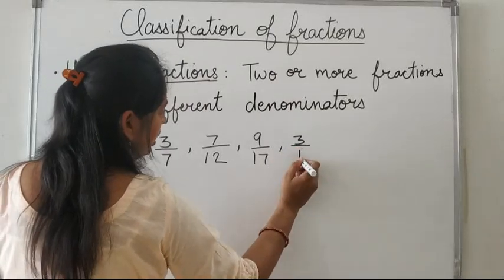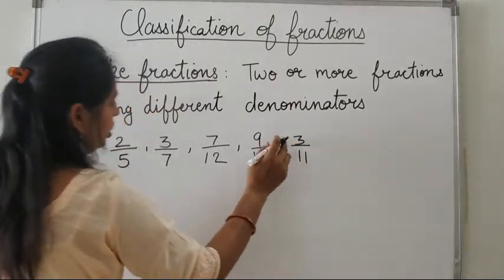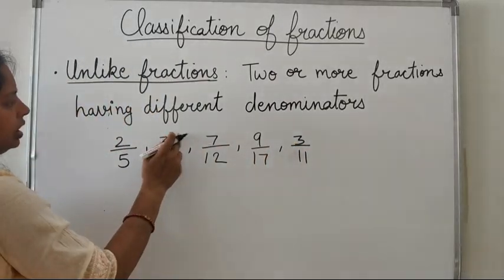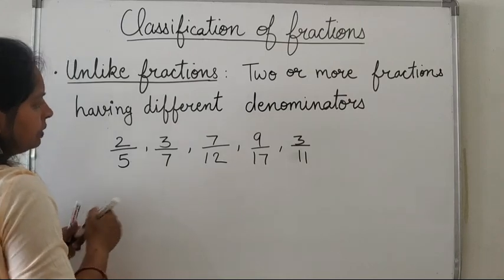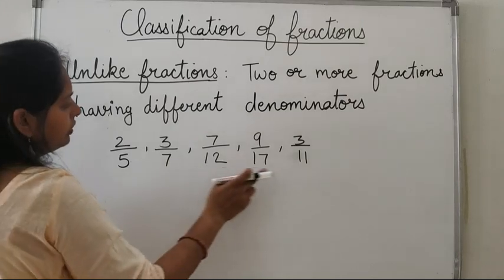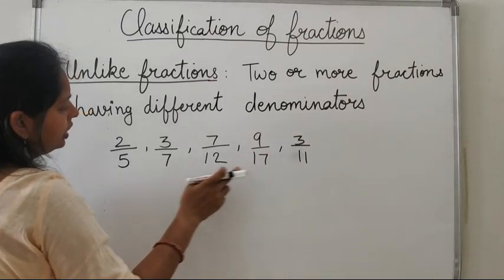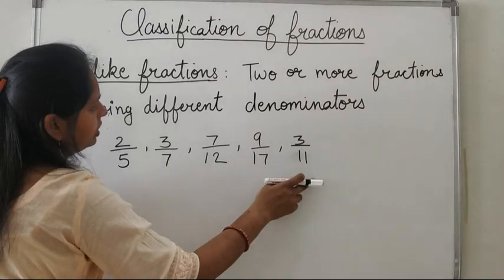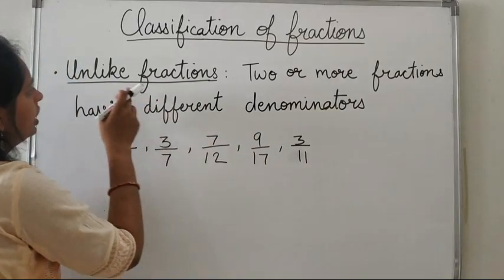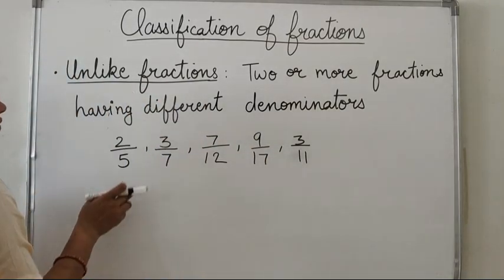We can also note that 3 upon 11 — although 3 and 3 are the same numerators, they have different denominators, so they fall in the category of unlike fractions.